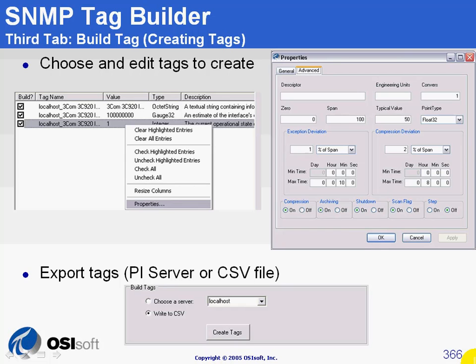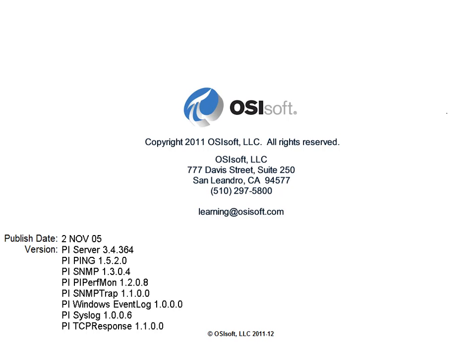When you've selected all the counters to create, you can review or edit them by right-clicking on one or more and choosing properties to access the properties window. When you're ready, you can choose a PI server and create the tags directly, or write the tag configuration to a CSV file — a comma-separated values file — so you can review it in Excel and create the tags whenever you want.